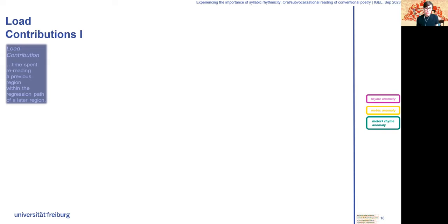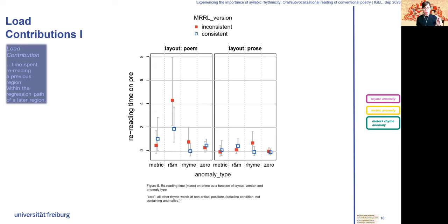We also calculated the load contributions, which is a measure that calculates the time spent re-reading a previous region within the regression path of a later region. For example, selective re-reading of only the pre-rhyme within the regression path of its subsequent rhyme word. We found in both layouts that rhyme anomalies triggered selective re-reading of the pre-rhyme, suggesting that readers tried to solve this detected anomaly across lines.